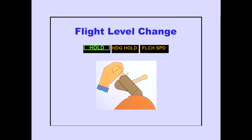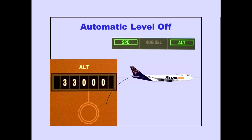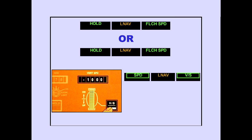In flight level change, if the thrust levers are manually repositioned, throttle hold is displayed. The flight level change mode ends with an automatic level off. When the airplane captures an altitude, the autothrottle mode changes to speed, and the pitch mode changes to altitude. When the autopilot flight director is operating in flight level change or in VNAV, pushing the vertical speed switch transfers the autothrottle to the speed mode.